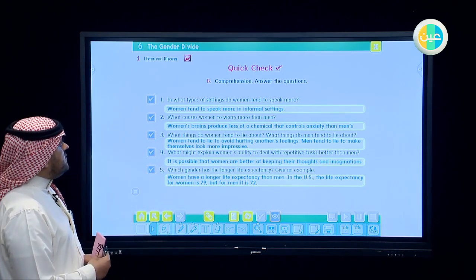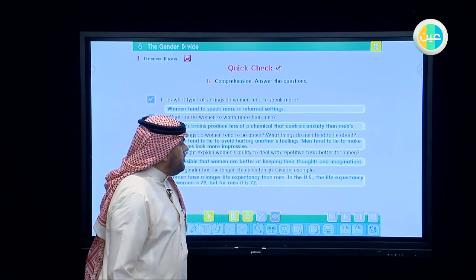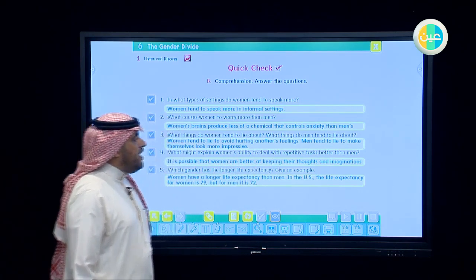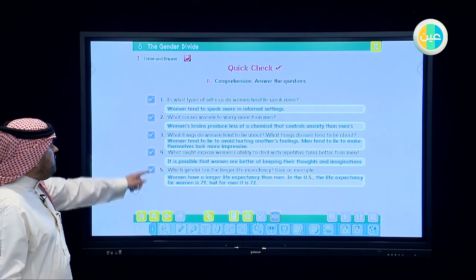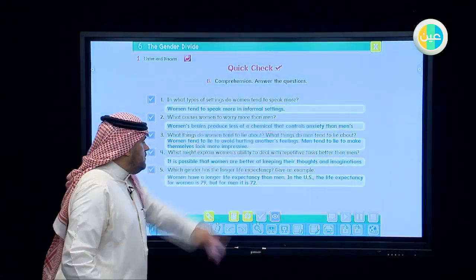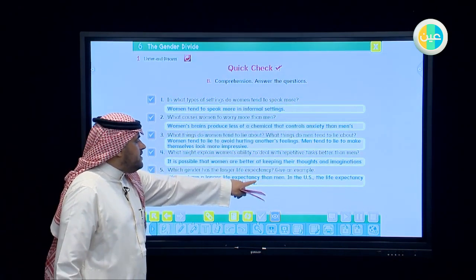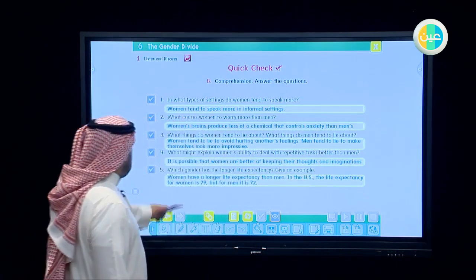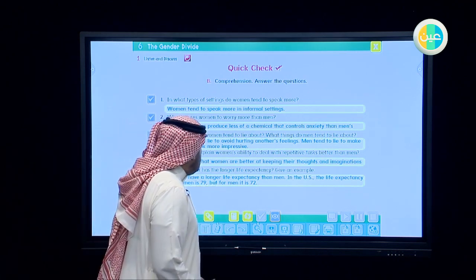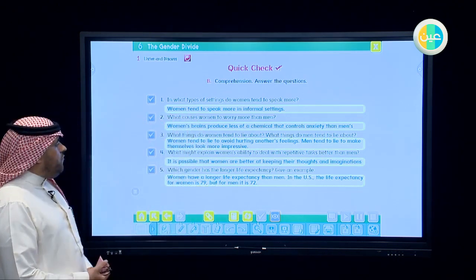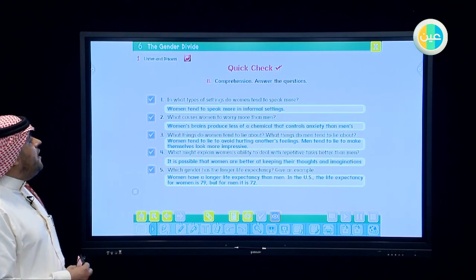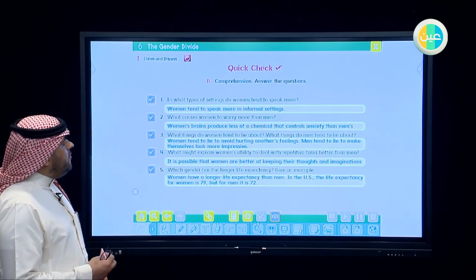Number four, what might explain women's ability to deal with repetitive tasks better than men? It's possible that women are better keeping their thoughts and imaginations. This is the difference here. Number five, which gender has the longer life expenses? Give an example. Women have longer life expenses than men. In the USA life expenses for women is 79 years, they live for 79 years, and women live for 72 years. So the expenses of men are less than the expenses of women.